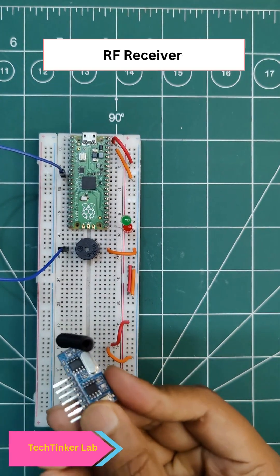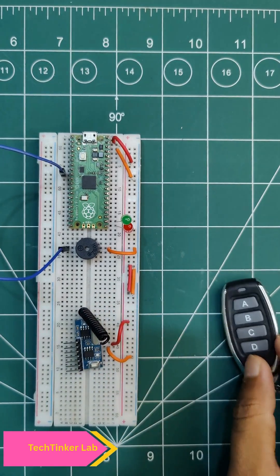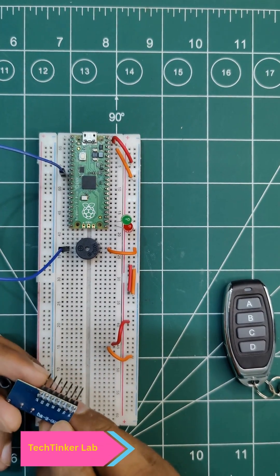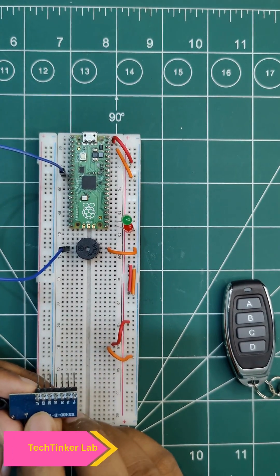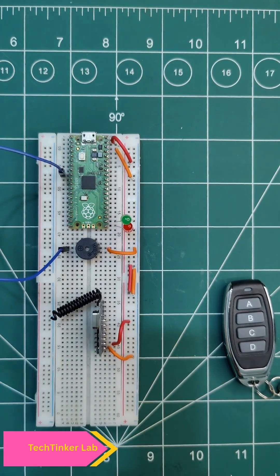Now this is our RF module, this is the RF receiver and this is our RF transmitter. So let's interface it first. You will see there are four pins D0 to D3 and the positive negative. The positive negative I will directly connect here.